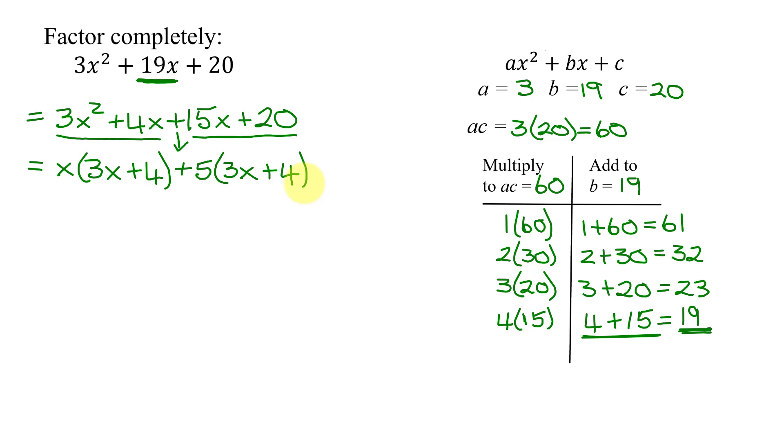Now, did factoring by grouping work? Is this binomial the same as this one? Yes, that's your common binomial factor that you factor in front. And if I factor these in front, it's going to leave me with x plus 5 in my second parentheses.